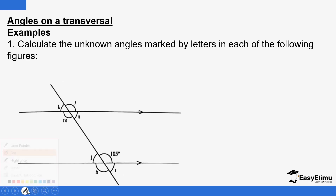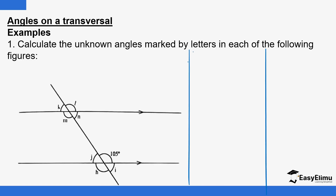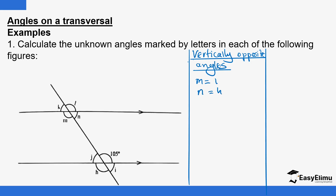There is a good example here. Let's start with the vertically opposite angles. We have M equal to L, N is equal to H, I equal to J, and H is equal to 105 degrees. Those are vertically opposite angles.